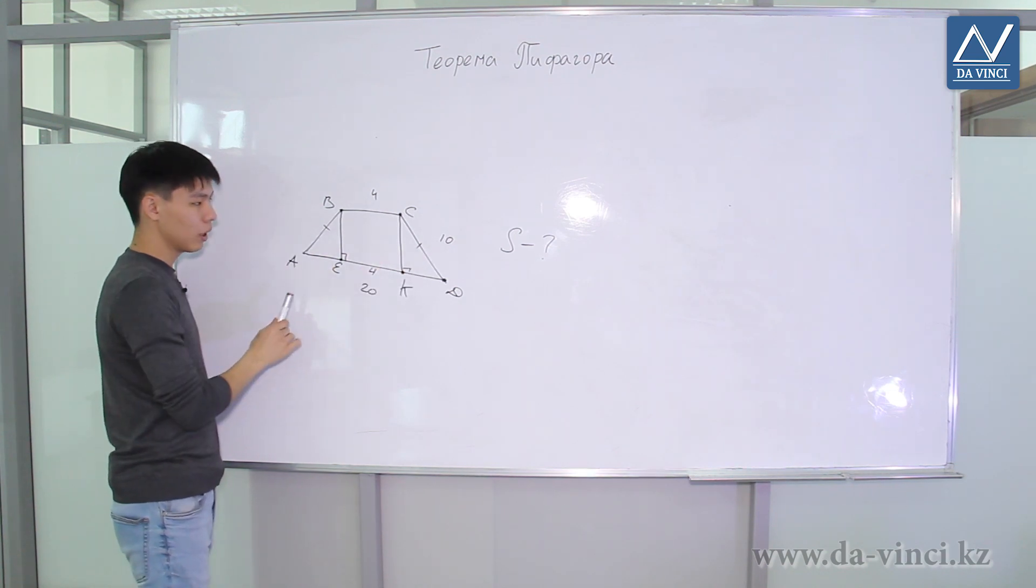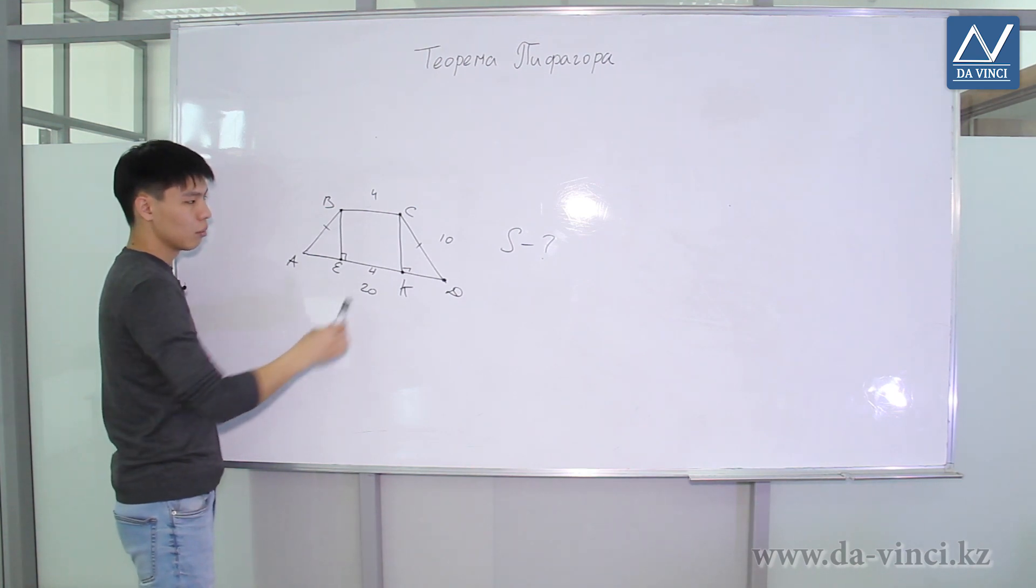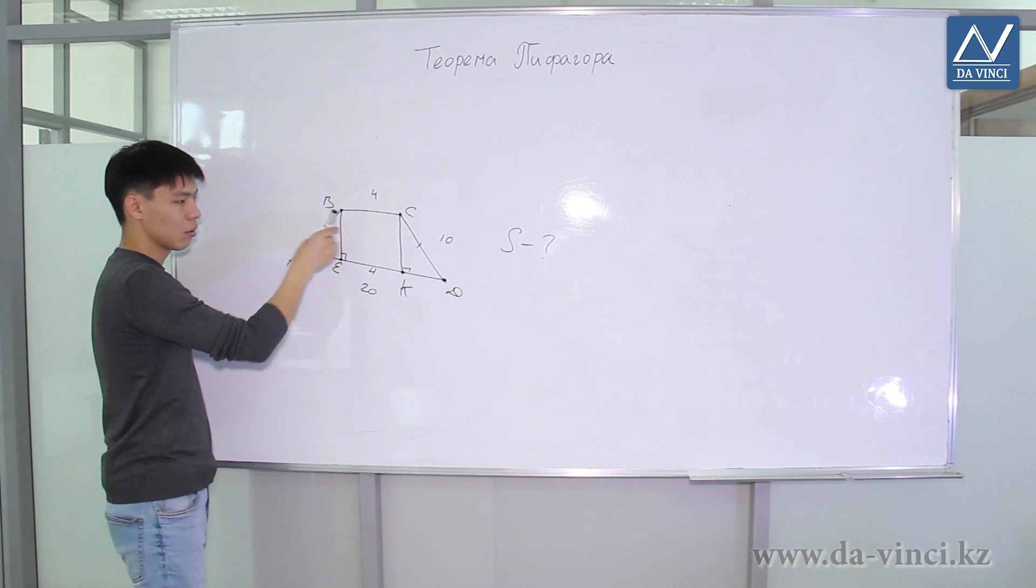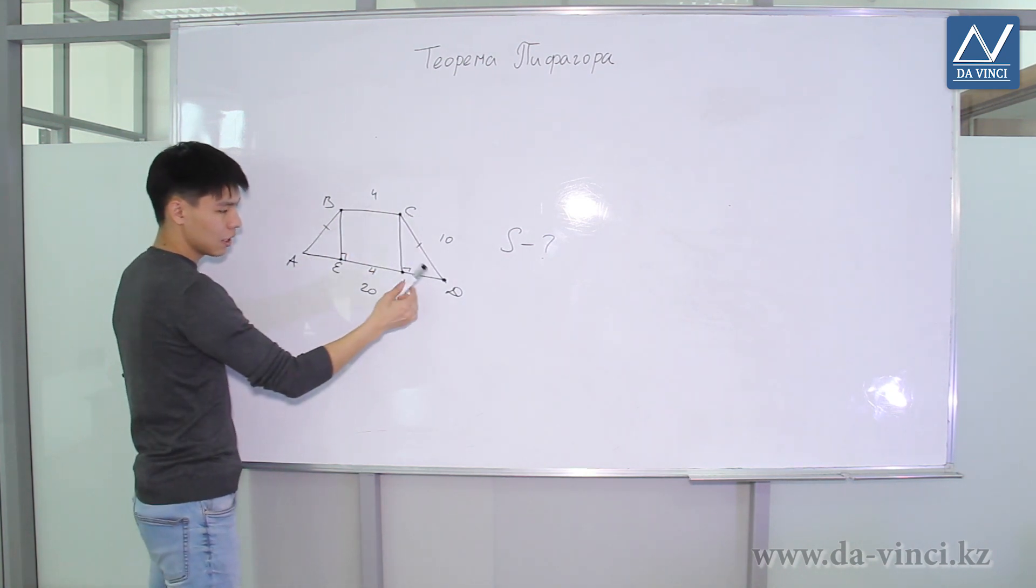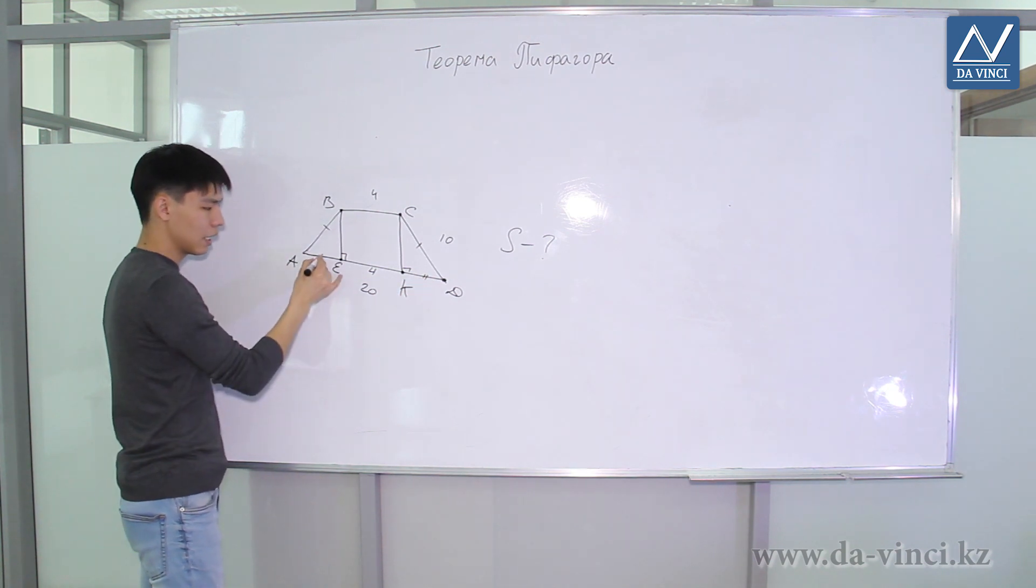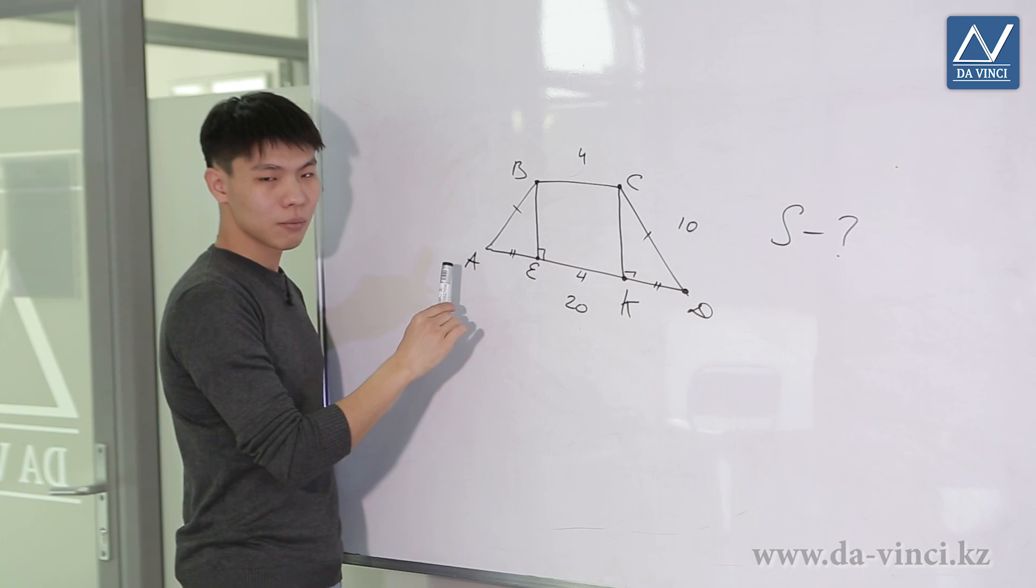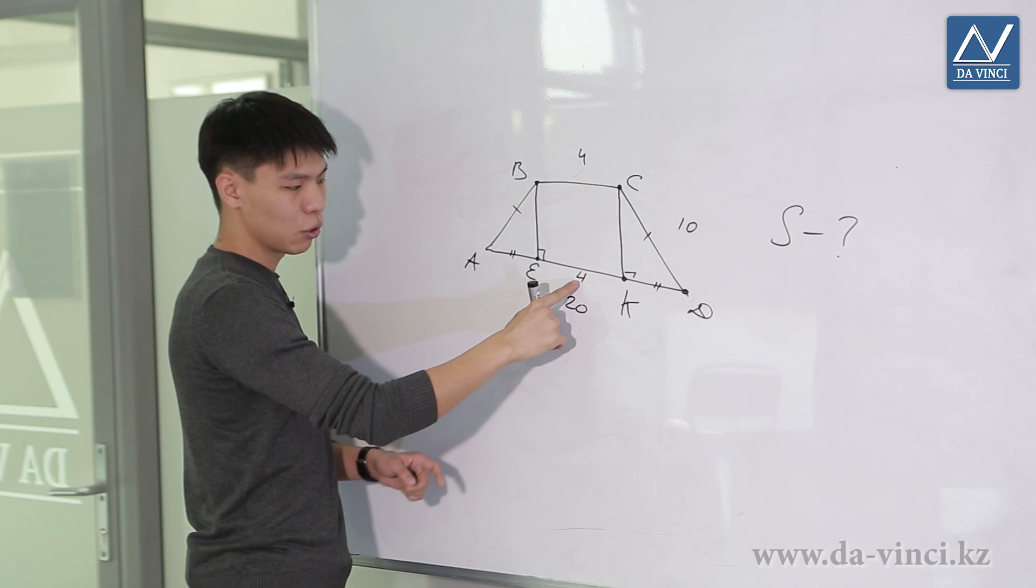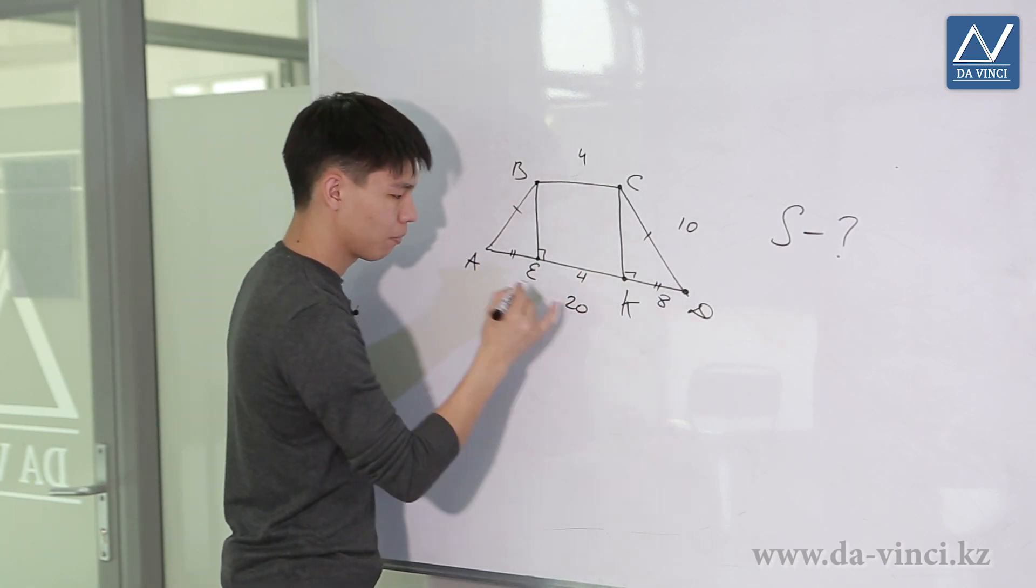Since this trapezoid is equilateral, the left and right triangles will be equal to each other because they have the same legs and the same hypotenuses. By the equality criterion of right triangles they are equal. This means that the segments KD and AE are also equal to each other. AD is 20, EK is 4. So these two segments are 20 minus 4, 16. So each of them is 8.